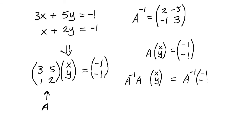Therefore the matrix equation becomes (x; y) equals (2, minus 5; minus 1, 3) multiplied by (minus 1; minus 1).